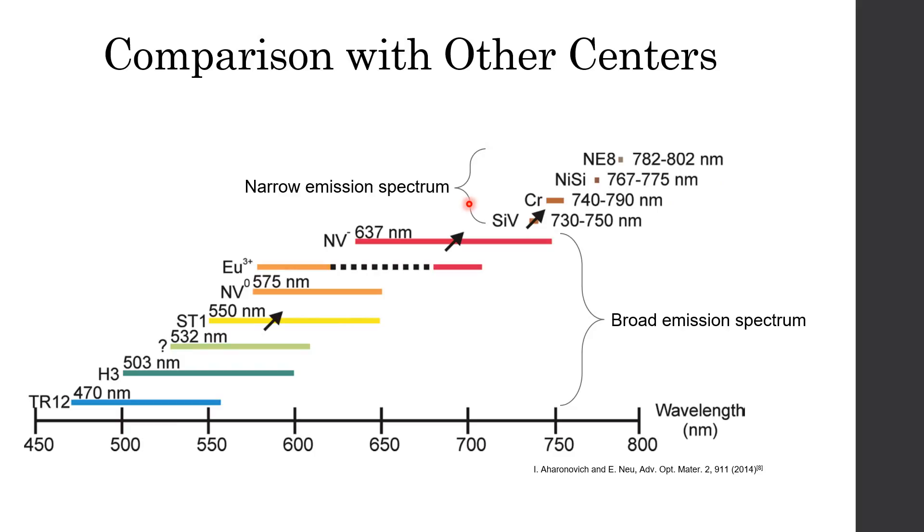Also, you may notice that nickel, silicon, and NEA have much narrower bandwidth. And according to other studies, they also show bright and narrow emission. So why we don't use them? First, reports on layer lifetime and phonon coupling are ambiguous now. Second, creating NEA center remains challenging. Ion implantation and high-pressure, high-temperature annealing did not yield NEA center. And for nickel silicon complex and other nickel-related defects, their implantation efficiency is only 10 to the minus 6, making their use in nanophotonics highly challenging.